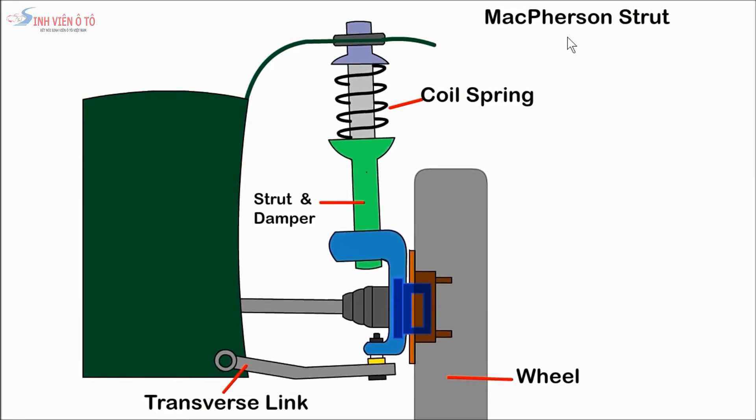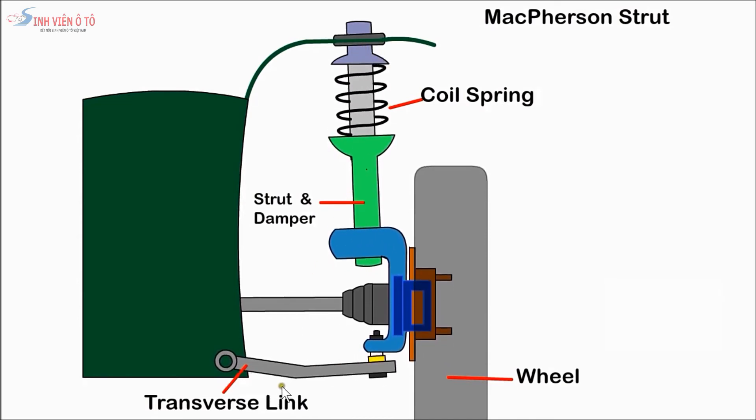The McPherson strut has a telescopic strut anchored at the top via flexible rubber mounting. The top mounting includes a bearing which allows the complete strut to swivel and steer the car. The transverse link is connected to the strut with a ball joint. To absorb road shocks, a coil spring surrounds the strut, which also contains a damper.